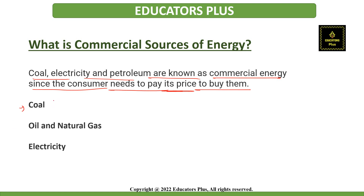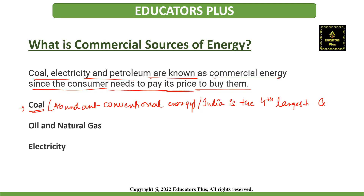Coal is a very important and abundant conventional source of energy. It is basically a black-brown sedimentary rock whose formation occurs when the remains of plants convert into lignite and then into anthracite. This involves a long process that takes place over a long period of time. Coal constitutes about 70 percent of the total commercial energy consumption in India, and India is the fourth largest coal-producing country. Coal deposits are primarily found in Bihar, Odisha, Madhya Pradesh, Jharkhand, and Bengal.